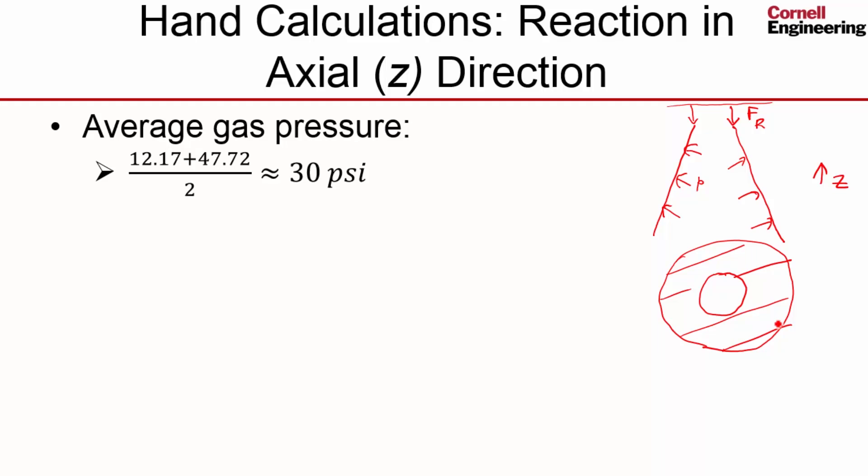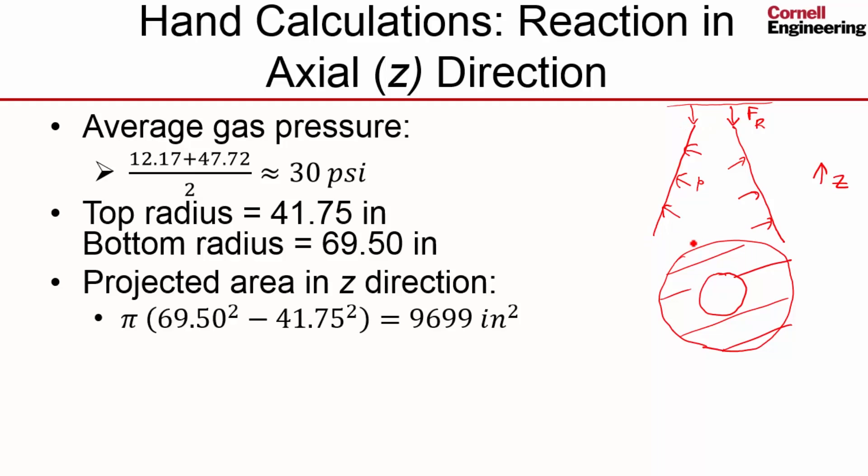So we'll just work with an average gas pressure. This is the top radius, this is the bottom radius, and then we can calculate the projected area from those two radii in this form.